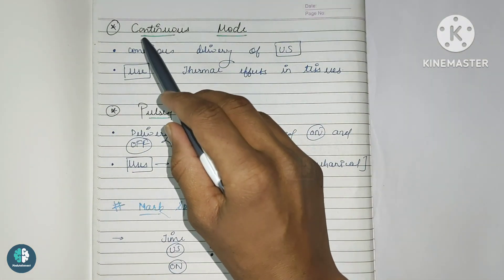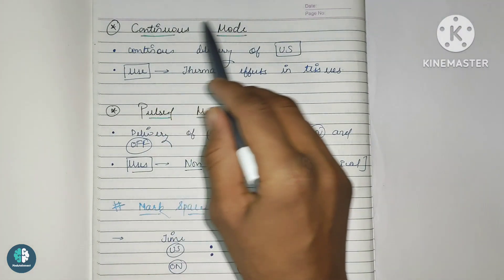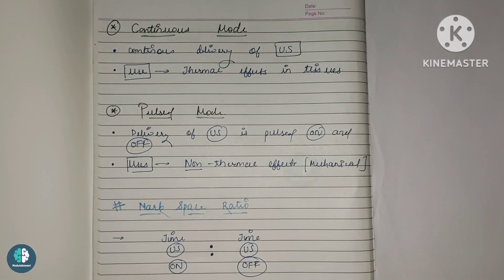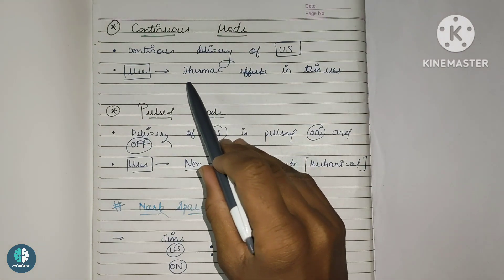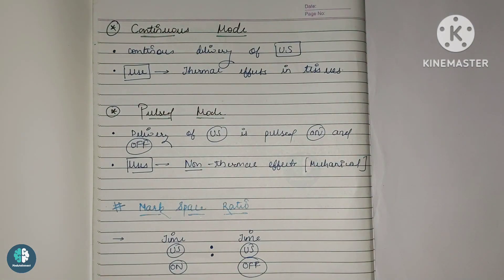So basically there are two modes of application. Let's talk about the very first one — the continuous mode of application of US. Continuous mode means the continuous delivery of the ultrasound into the tissues. This continuous mode of application is used to achieve the thermal effects in the tissues, rather than the non-thermal effects which are present in the pulsed mode. In continuous mode we generally get thermal effects because there we have 100% duty cycle, which we will discuss later in the video.